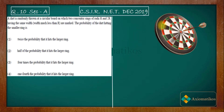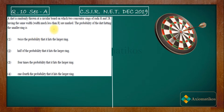It is given that the width is the same for both rings, and also that the width is much less than R. The question asks for the probability of the dart hitting the smaller ring — that is, hitting the area corresponding to the smaller ring on the board.